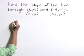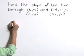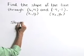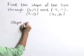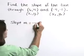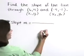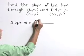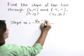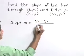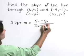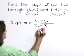Now to find the slope, using the formula for slope, the slope — also called m — is the change in y over the change in x, or y2 minus y1 over x2 minus x1.